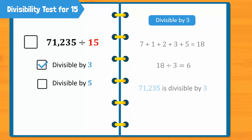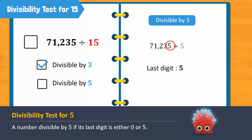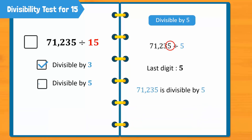Secondly, we can see that this number ends in the digit 5. This means that it is divisible by 5 as well. Since 71,235 is divisible by both factors of 15, we know that it is completely divisible by 15. That was quick, wasn't it? We didn't have to do any long calculations to find out if the number was divisible by 15.